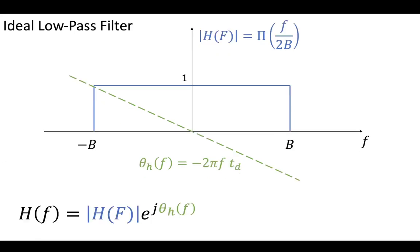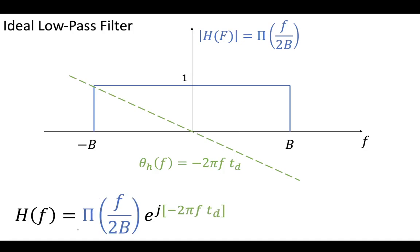And if we do that, we can write the total transfer function. The transfer function is going to be the amplitude response multiplied by e raised to the j of the phase response. Plugging in for the amplitude response and the angle response, we get this equation which describes the transfer function of our ideal low-pass filter.